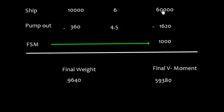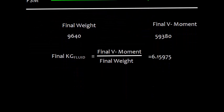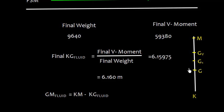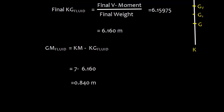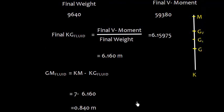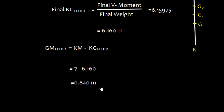I can add it and I get the final weight as 9640. 10,000 minus 360. And the final vertical movement is 59,380. The final KG and this KG will be the fluid KG and I get this value or round off to 6.160. If we look at this diagram, we will understand this was K and this was G and the KG has increased and this is V vertical shift which is free surface correction. Now, the value of GM fluid will be KM which is 7 meter minus KG fluid and this is K and GV that is the KG fluid.